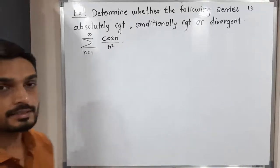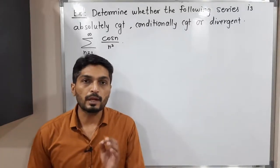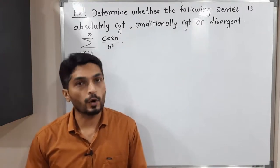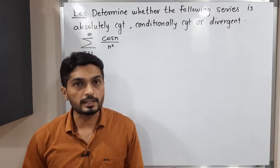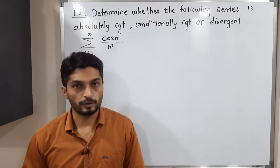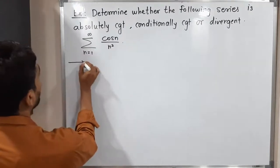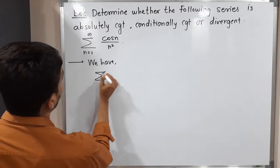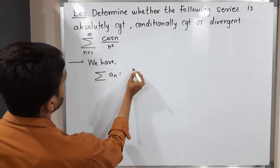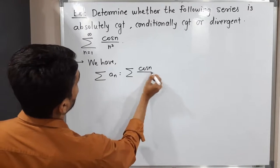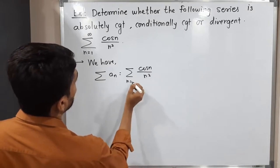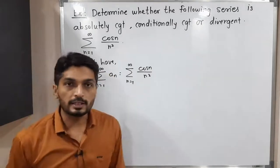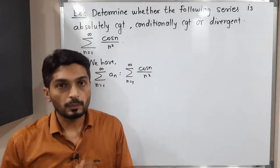Hi everyone, let us discuss this example. We have a series and we have to check whether it is absolutely convergent, conditionally convergent, or divergent. First of all, we will check if it is absolutely convergent or not. Let me write the given series — we will call it summation a_n. So this is summation of cos n upon n squared, with n running from 1 to infinity.